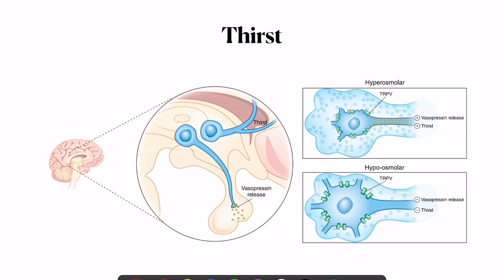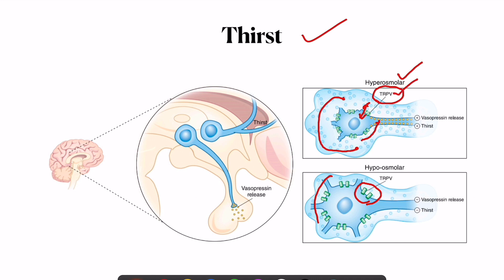To maintain water homeostasis, the most important factor is thirst. The OVLT — organum vasculosum lamina terminalis — and the supraoptic nucleus contain cells with TRPV (transient receptor potential vanilloid) channels, which are cation channels. If there is a change in osmolarity around these cells — for example, hyperosmolarity — the cells shrink, triggering cation flow through the TRPV receptors.